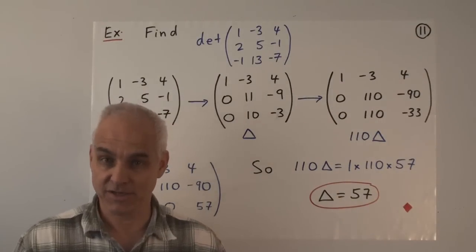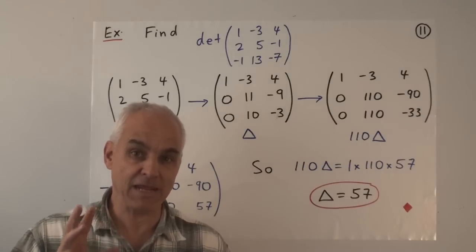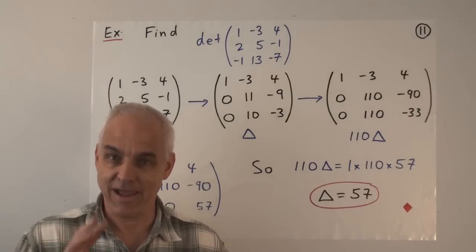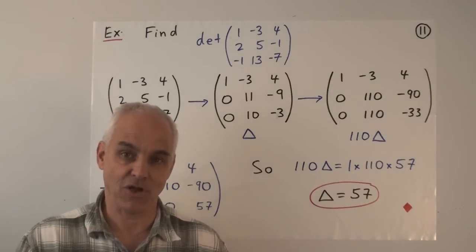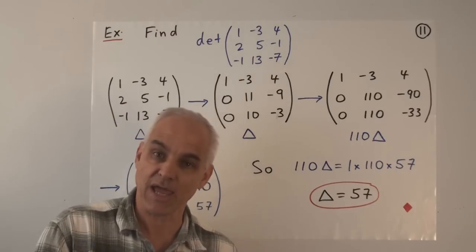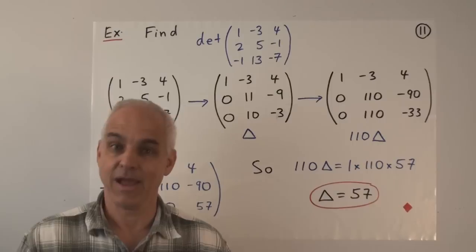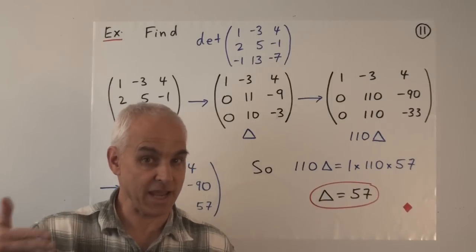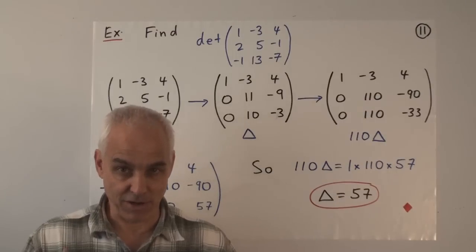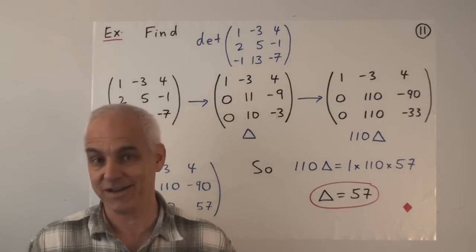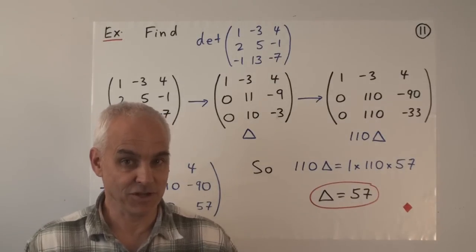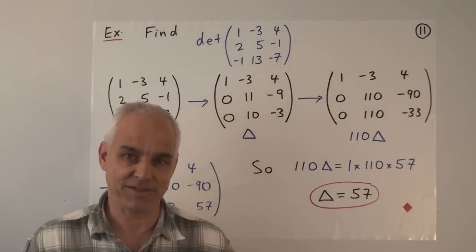So haven't we done a lot today? We've addressed the three main problems in linear algebra and shown how this powerful technique of row reduction helps us to actually concretely solve these problems. We've restricted our attention to the 2×2 and 3×3 cases, and there will be more to say when we go to higher dimensions. But already we are illustrating the power of this row reduction technique.